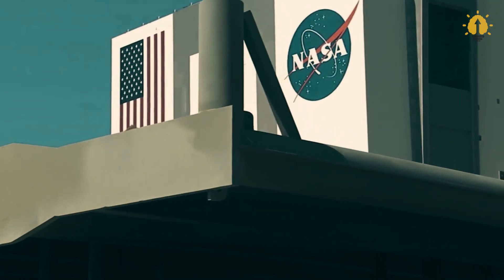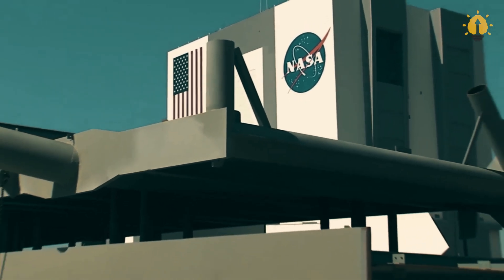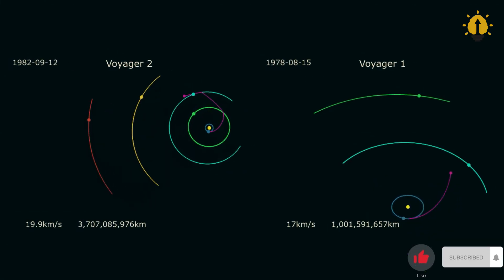The Voyager 1 mission took advantage of this alignment in its close flyby of Jupiter in 1979. Meanwhile, Voyager 2 embarked on a different trajectory. It harnessed the power of planetary gravity assists not once but multiple times.